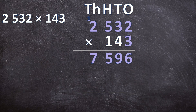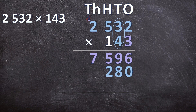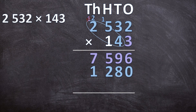Now we multiply 40 times 2532. Cancel the carried 1 and add a zero in the answer line because we're multiplying by 40, not 4. Then: 2 times 4 is 8. 3 times 4 is 12 — write down 2, carry 1. 5 times 4 is 20, plus the carried 1 is 21 — write down 1, carry 2. 2 times 4 is 8, plus the carried 2 is 10 — write down 0 and also write the 1. So 2532 times 40 is 101,280.